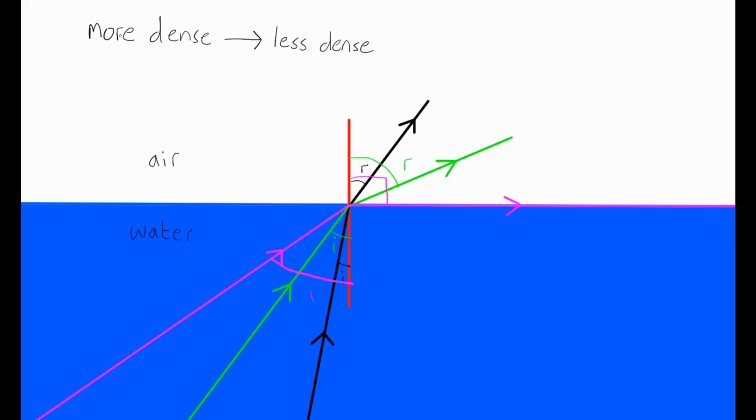And it always happens when we go from a more dense to a less dense substance. Each medium has a different critical angle. The critical angle for glass is about 42 degrees. The critical angle for diamond, for example, is only about 25 degrees.